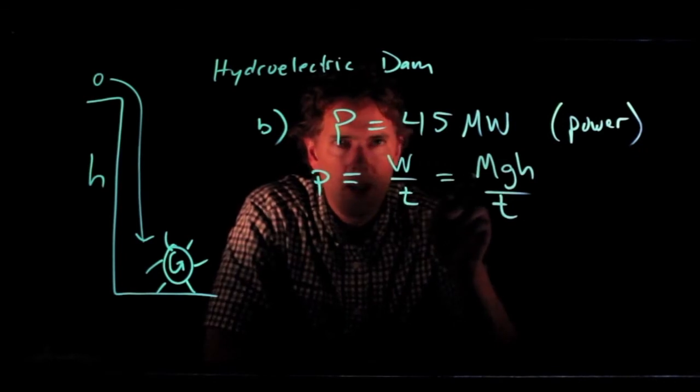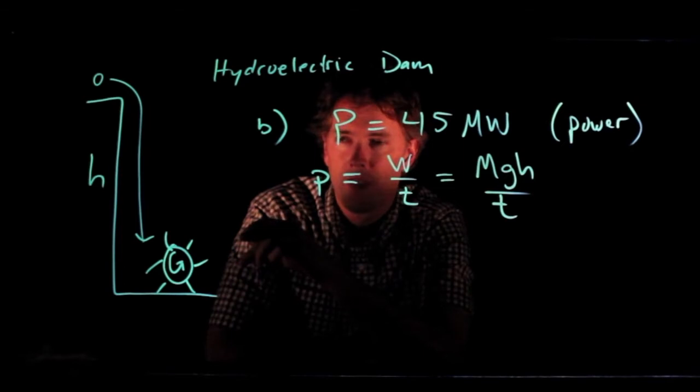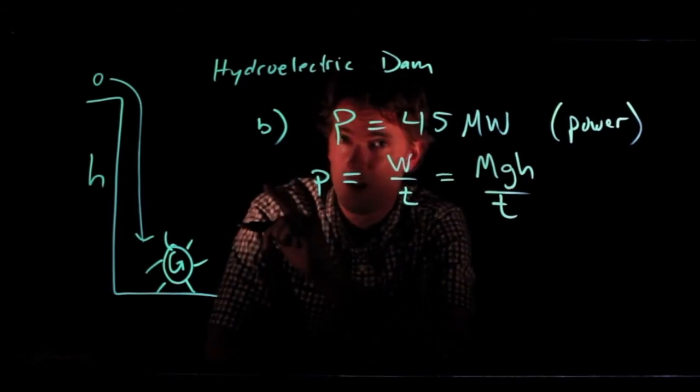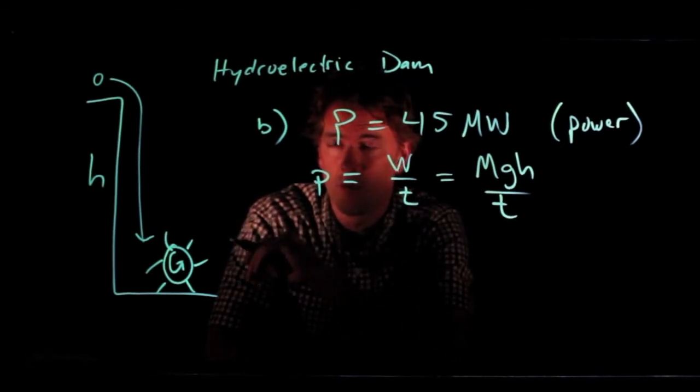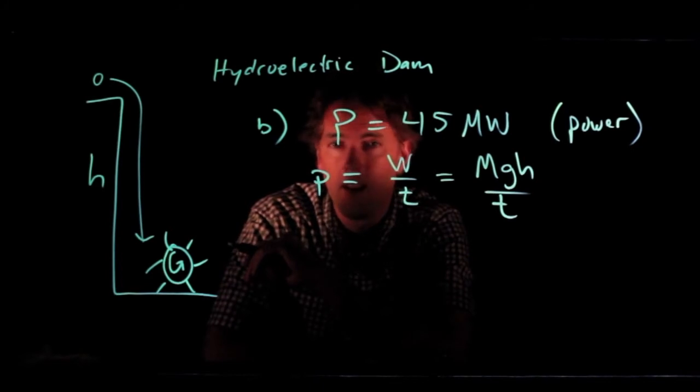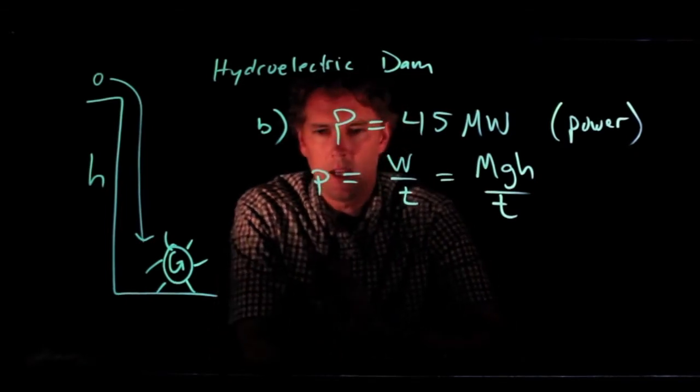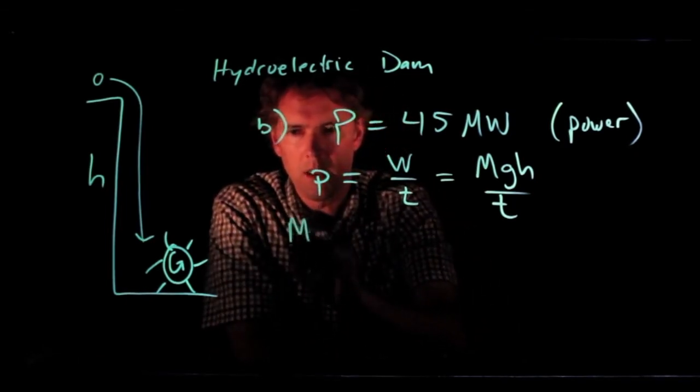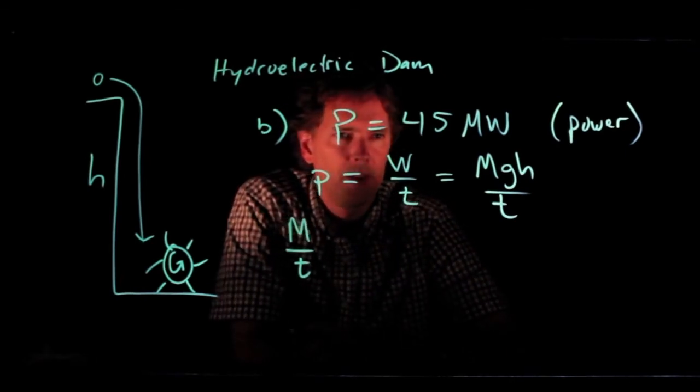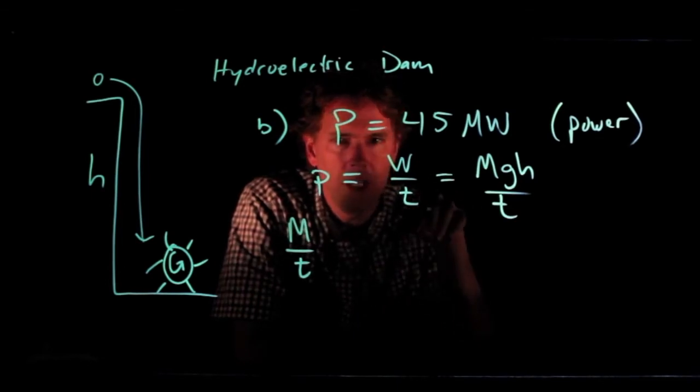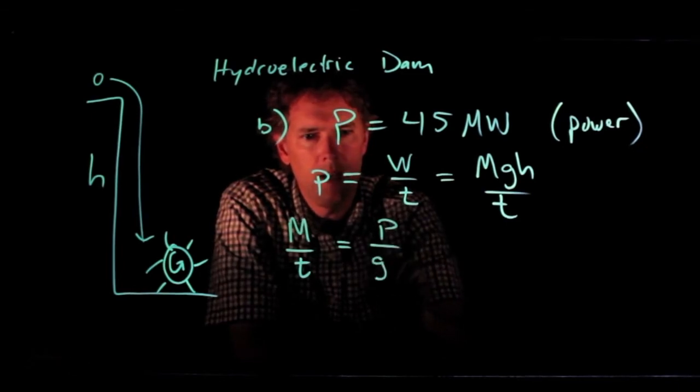Now, I used a capital M here, because 45 megawatts sounds like a lot of power. I suspect that one kilogram of water is not going to be able to do that. Probably a lot of kilograms of water falling per second are required, and that's why I used a capital M. So what they are looking for is, what is the mass of water per second to generate that much power? If I look at this previous equation, M over t is just equal to P divided by gh.